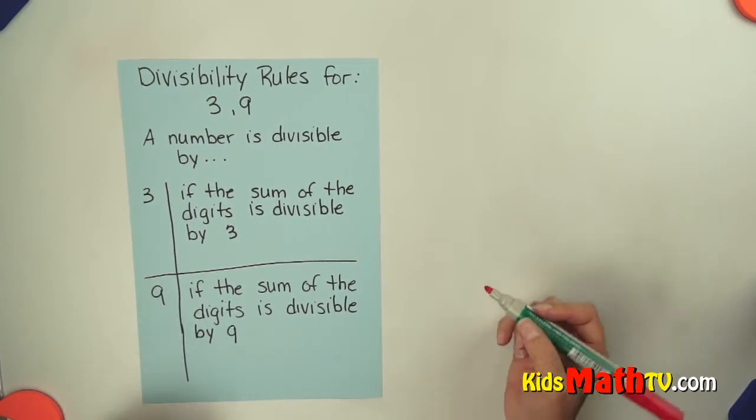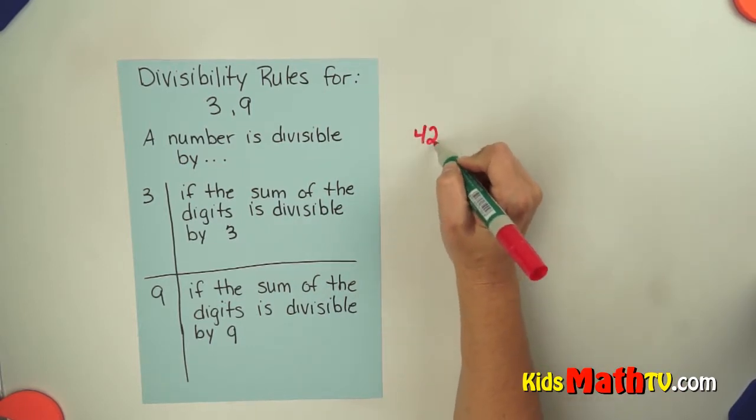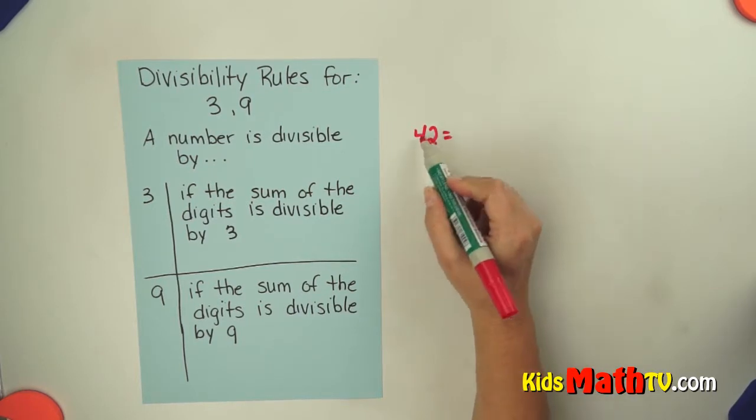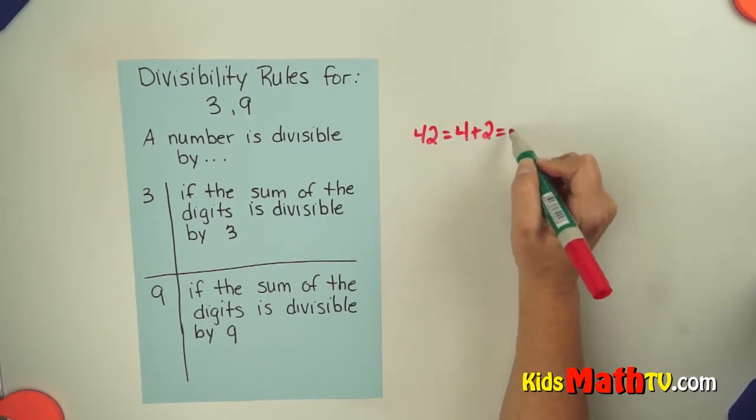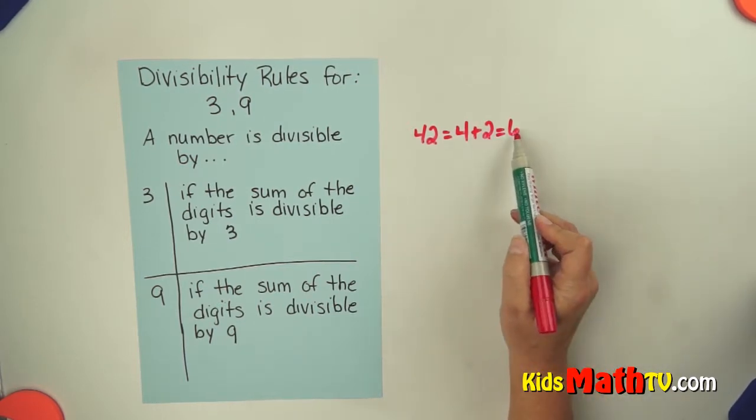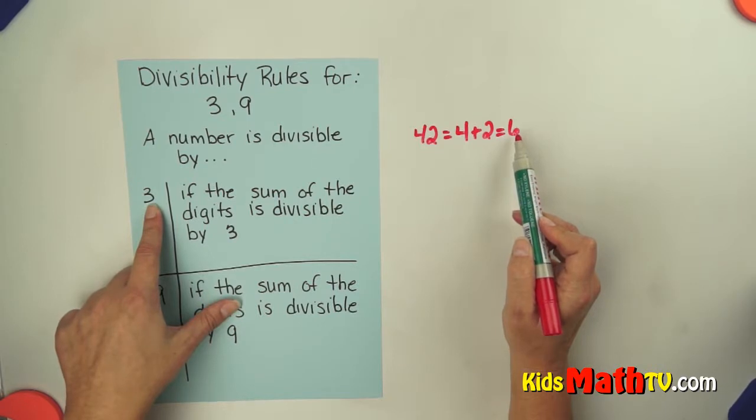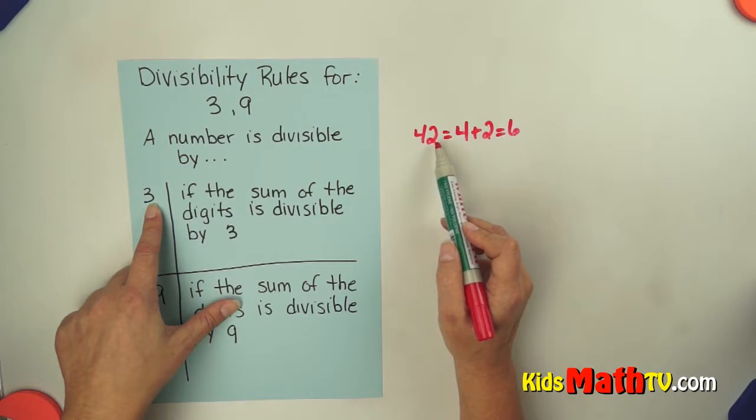For example, if we have the number 42, we add up the digits. 4 plus 2 is 6. I check, does 6 divide by 3 evenly? Yes, it does. So 42 will divide by 3 evenly.